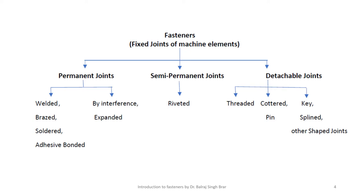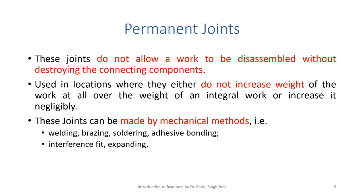Permanent joints do not allow a part to be disassembled without destroying the connecting components. They are used in locations where they either do not increase the weight of the work at all or the increase in weight is negligible. For lighter parts, permanent joints are preferred, though when disassembly is needed, some damage to the components will occur. These joints can be made by mechanical methods such as welding, brazing, soldering, adhesive bonding, interference fit, and expanding.